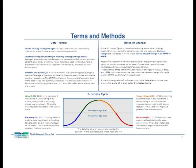We use moving totals when the metric we're looking at makes logical sense to be summed up — things such as sales, revenue, profits, or units shipped. However, we use moving averages when it doesn't make sense logically to use an arithmetic sum — for example, interest rates, indexes, or percentiles.